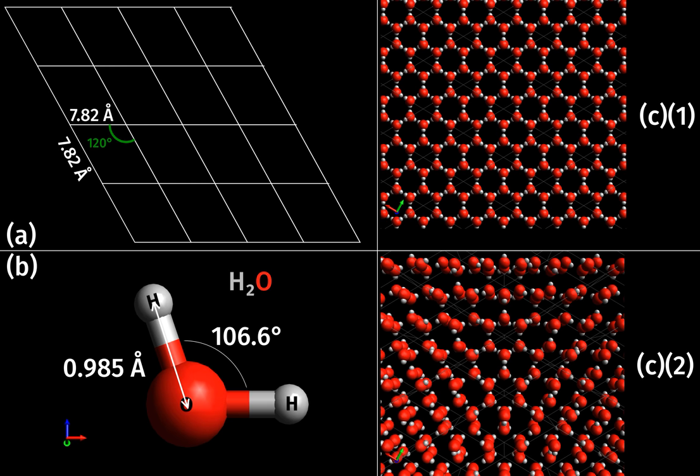Grain boundaries are interfaces where crystals of different orientations meet. A grain boundary is a single phase interface, with crystals on each side of the boundary being identical except in orientation. The term crystallite boundary is sometimes, though rarely, used.